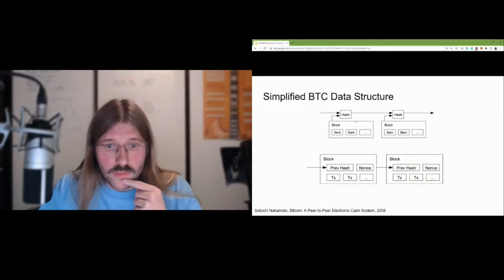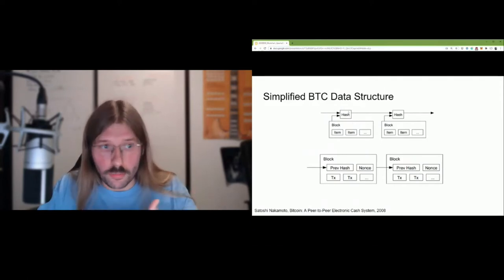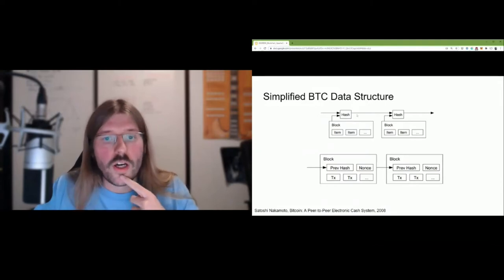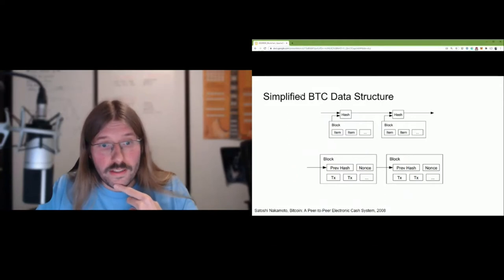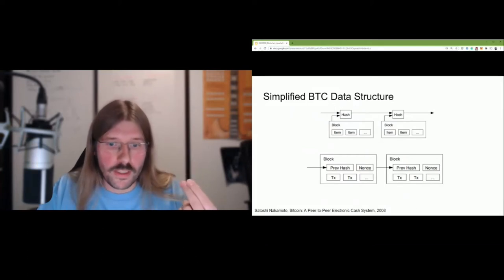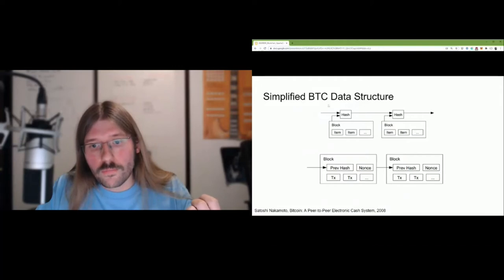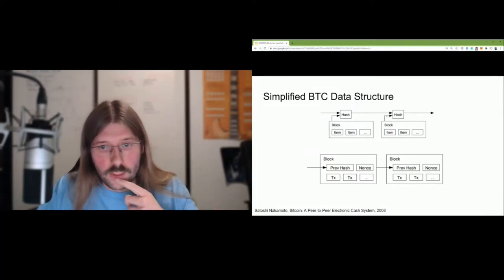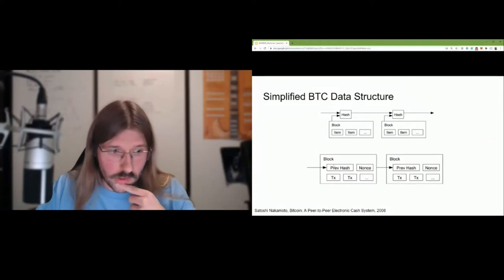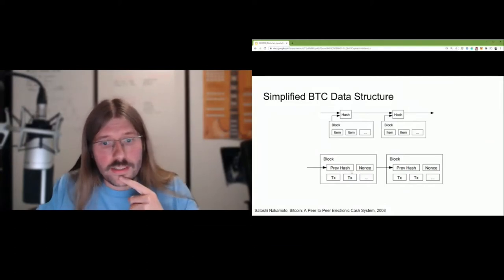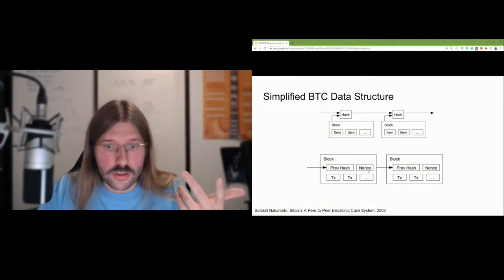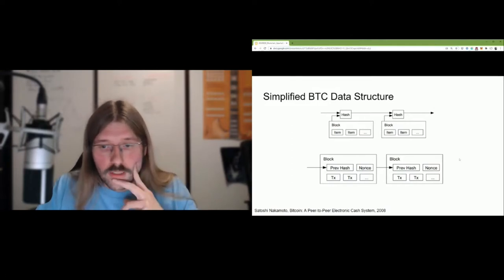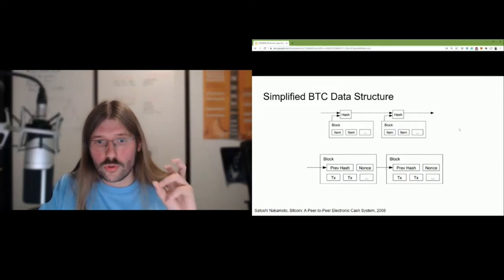This is the blockchain data structure in a simplified way. The idea is: we have a block, the block contains some items — normally transactions, but think of it as a payload. We generate a hash of the block, and we take the hash of the previous block and save both in our header. When we calculate the next block, the previous hash will be an input to the new hash. The hash of a block is the concatenation of the transactions with the previous hash and a so-called nonce. The nonce is the answer — or the solution — to the proof of work.